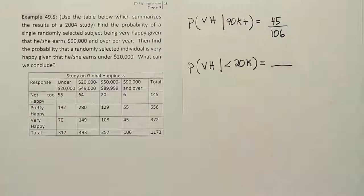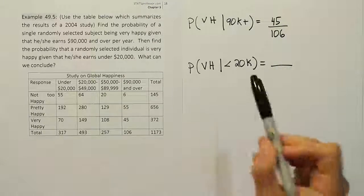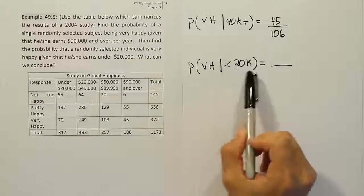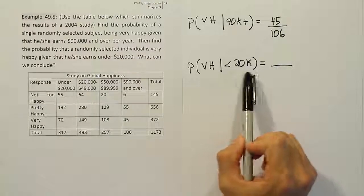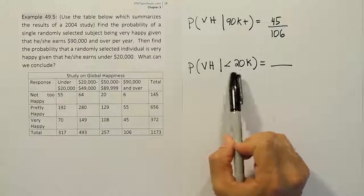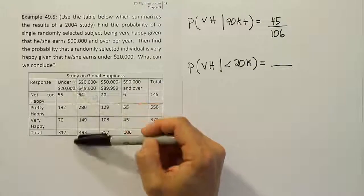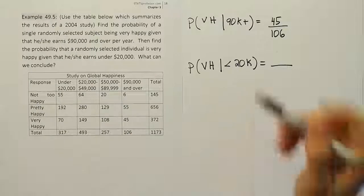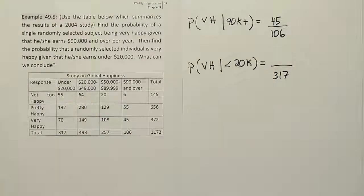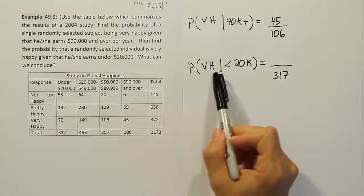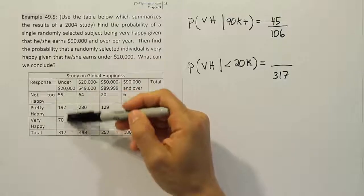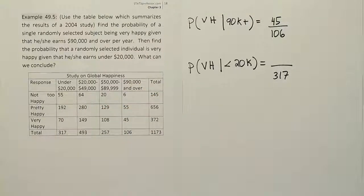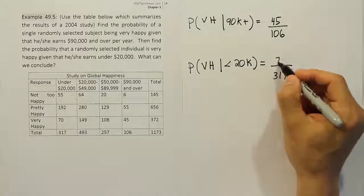Let's fill in this fraction and then we'll work out the decimals to compare these. Under $20,000 is the given that condition. We focus all our attention on the given that condition - we don't look anywhere else. Under $20,000 is the first column. We're going to take the total of that column to be our denominator, so that's 317. And then we look at the very happy number - that should be one of the numbers left over in that column, and sure enough, the very happy number here is 70. So 70 people out of that group were in the very happy category.